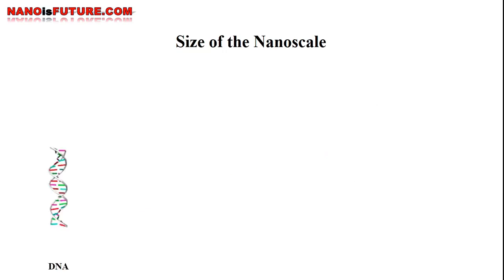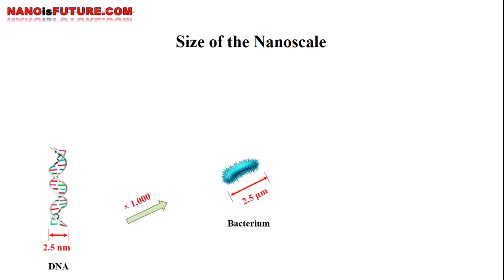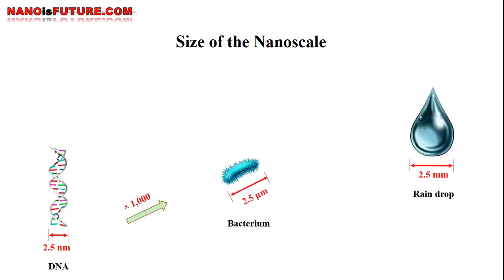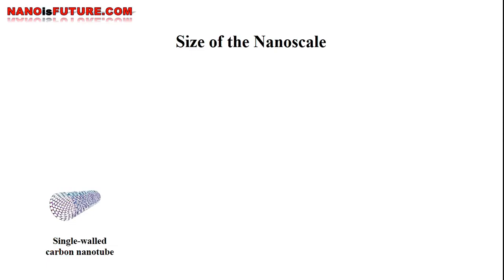A strand of human DNA is about 2.5 nanometers in diameter. A bacterium with 2.5 micrometers length is 1,000 times the diameter of DNA. And a raindrop with 2.5 millimeters diameter is 1,000 times the length of a bacterium.